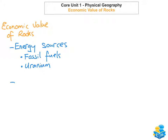The next important economic value of rocks is metallic minerals. We can extract lots of metallic minerals from rocks, such as iron, lead, gold, and copper. These all come from the metallic minerals within rocks and they are very valuable for jewellery, for pipes, for ornaments, and for lots of different things. So iron, copper, lead and gold are extremely valuable, and that's why rocks are very important.